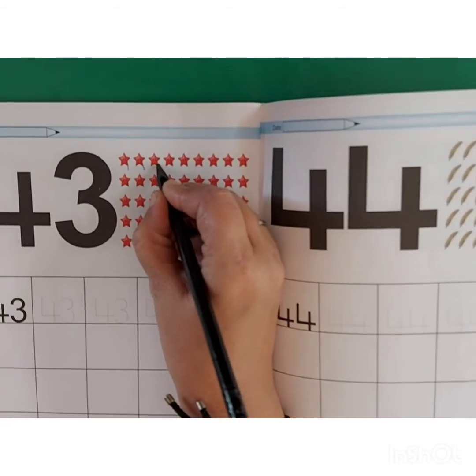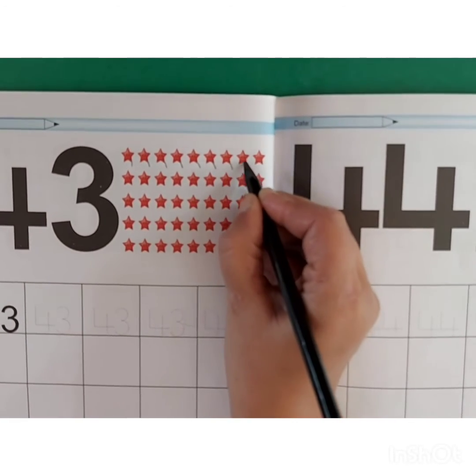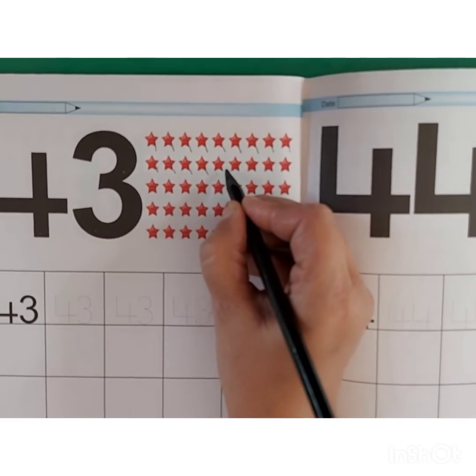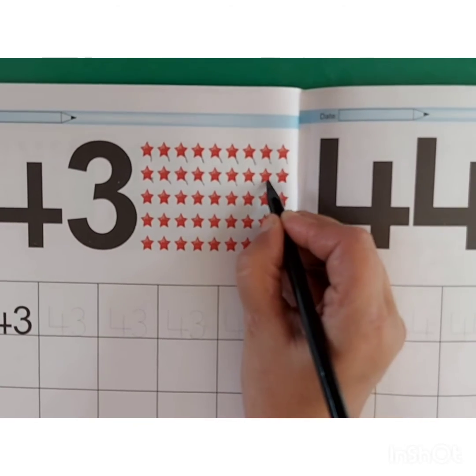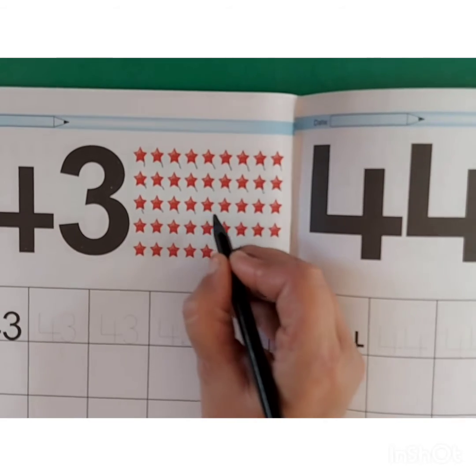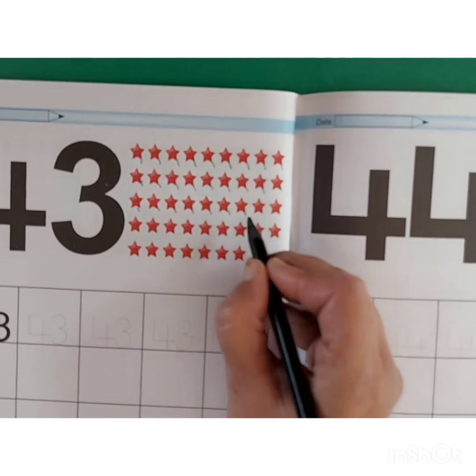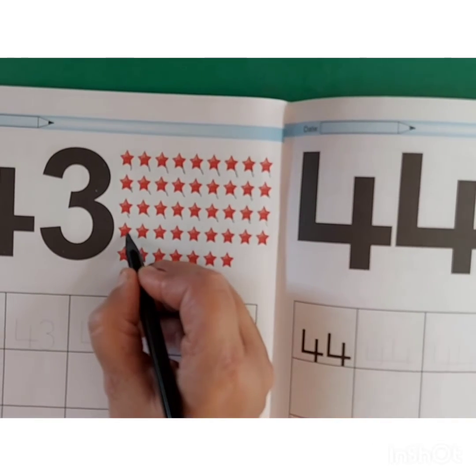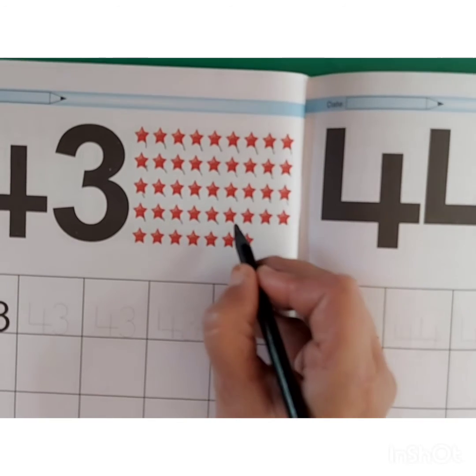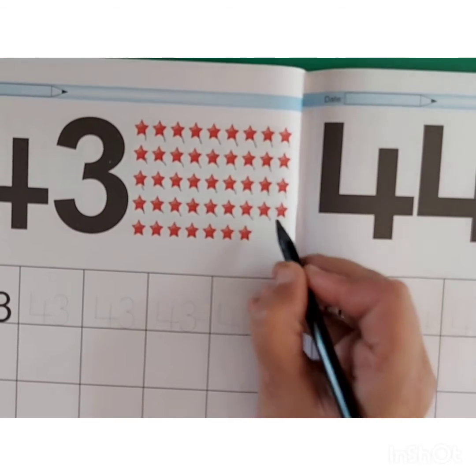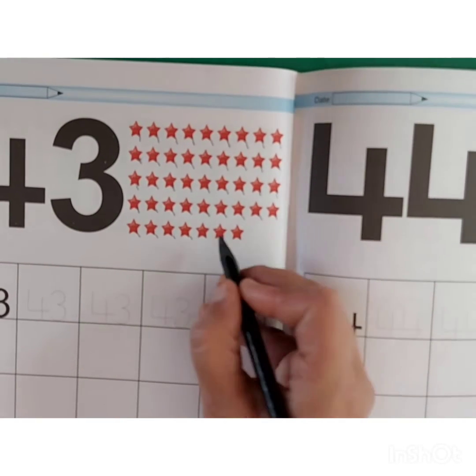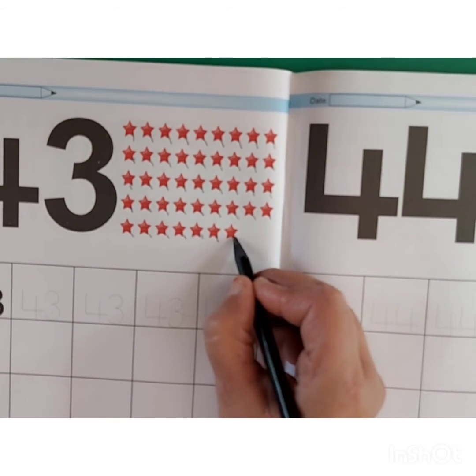1, 2, 3, 4, 5, 6, 7, 8, 9, 10, 11, 12, 13, 14, 15, 16, 17, 18, 19, 20, 21, 22, 23, 24, 25, 26, 27, 28, 29, 30, 31, 32, 33, 34, 35, 36, 37, 38, 39, 40, 41, 42, 43.